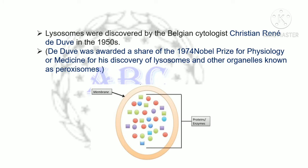Lysosomes were discovered by Belgian cytologist Christian René de Duve in the 1950s. De Duve was awarded a share of the 1974 Nobel Prize for Physiology or Medicine for his discovery of lysosomes and other organelles known as peroxisomes.